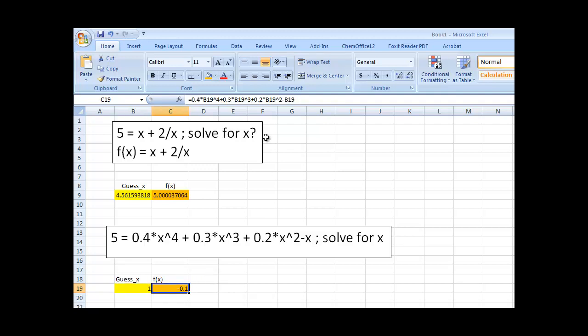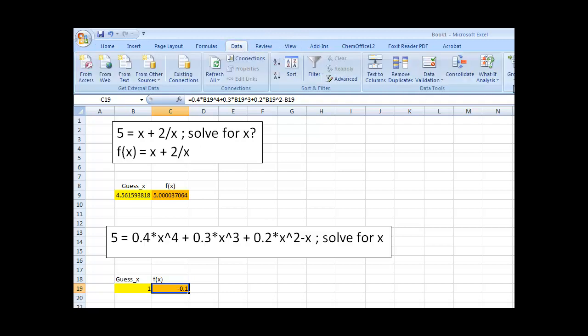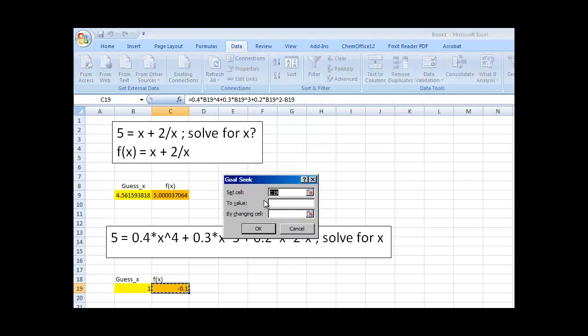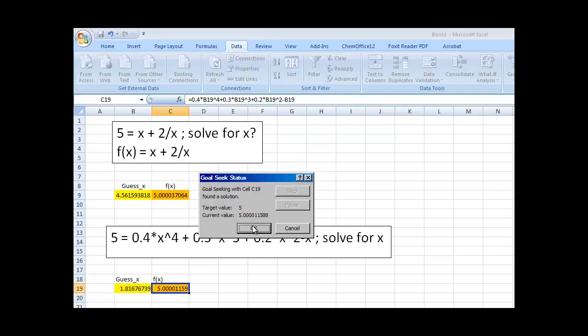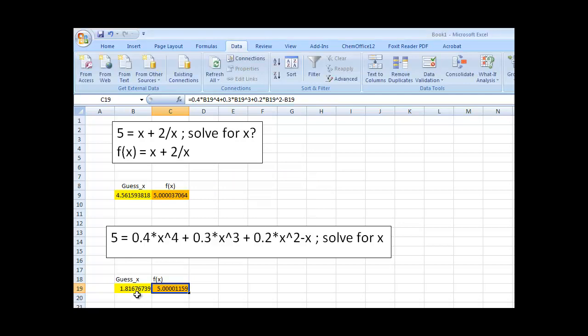And we're trying to solve for f of x equal to 5 again by changing our x value. So, again, click up here. Data. What if analysis. Goal seek. Set that value to 5. C19, which is our f of x value to 5, by changing this value. So, this is our new guess. And if I click OK. Less than a second, it found an answer. And there we have it. It says that f of x is equal to 5 when x equals 1.8167.